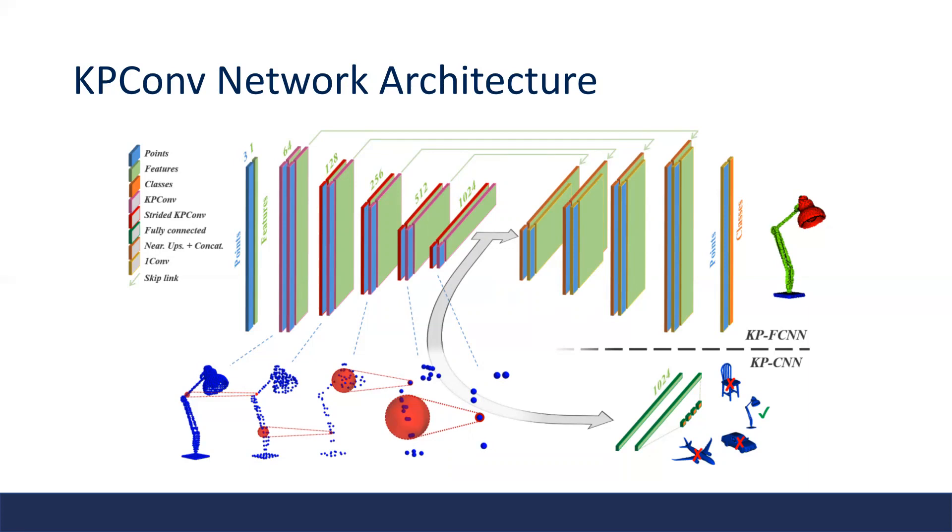For tasks like segmentation, a symmetric decoding network is applied that gradually upsamples the features to generate a label for each point. For tasks like classification, several fully connected layers are used to aggregate information globally and predict the final class.